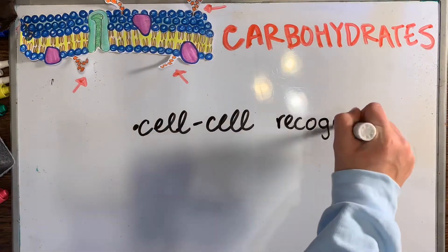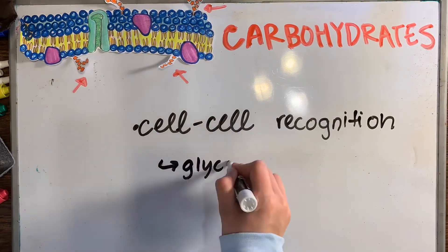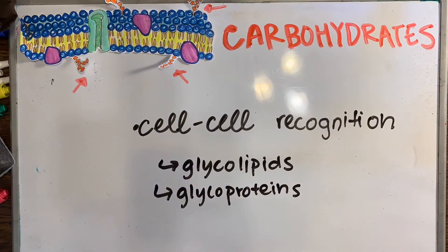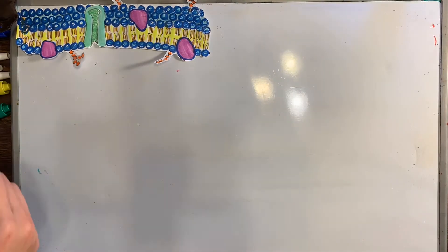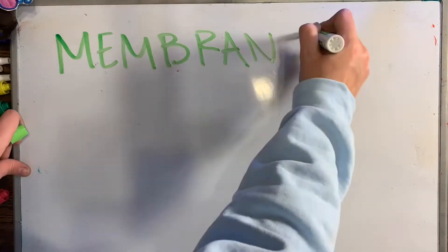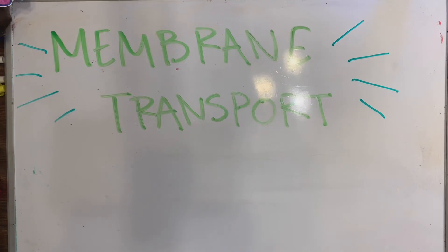Finally, we have the carbohydrates, whose function is to help cells recognize each other. Specifically, carbs can be glycolipids or glycoproteins. An example of these in action is blood typing — blood receiving is specific to a certain type, so the blood recognizes what type it is receiving.